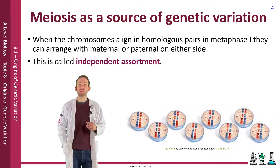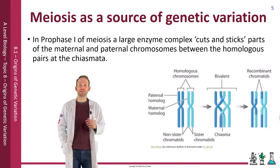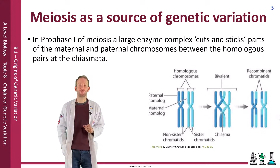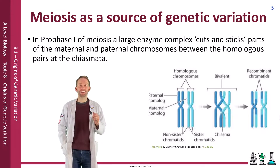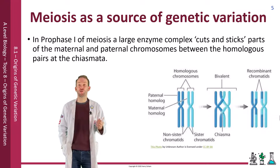In prophase one of meiosis, a large enzyme complex cuts and sticks parts of the maternal and paternal chromosomes between the homologous pairs at the chiasmata. This is called crossing over. This creates lots of new allele combinations and therefore genetic variation.